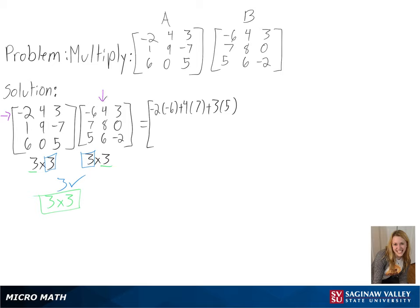For the middle column, we get negative 2 times 4 plus 4 times 8 plus 3 times 6. And for the final column, we get negative 2 times 3 plus 4 times 0 plus 3 times negative 2.